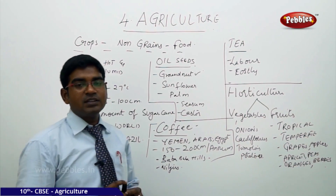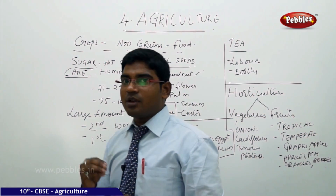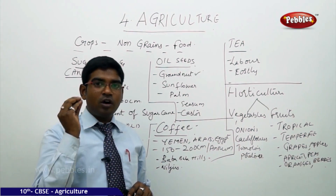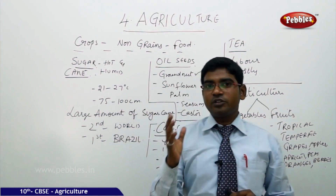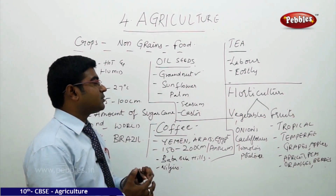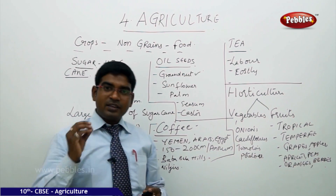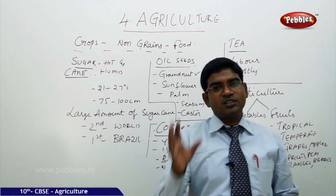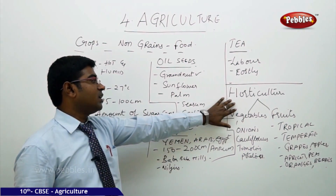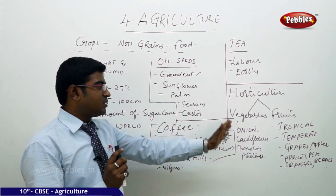Tea, the common man's drink, is produced extensively in India. It doesn't require heavy water — just moderate rain showers and moderate temperatures are sufficient. The main requirement is heavy labor, which is a costly affair. India has large tea estates in the northeastern states as well as in the southern states, all contributing to the national economy.